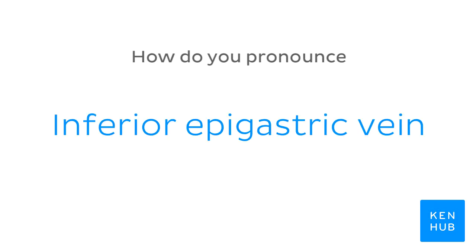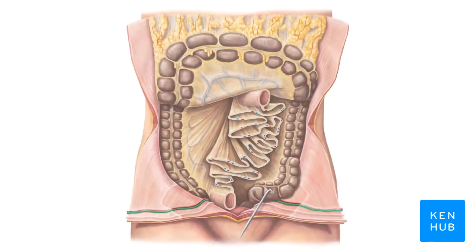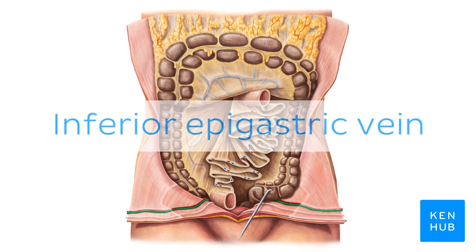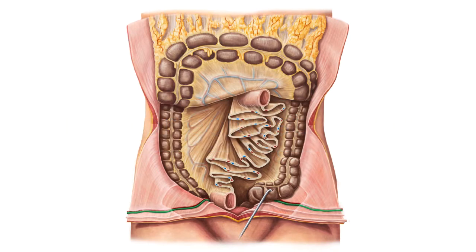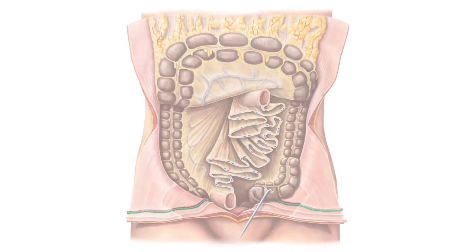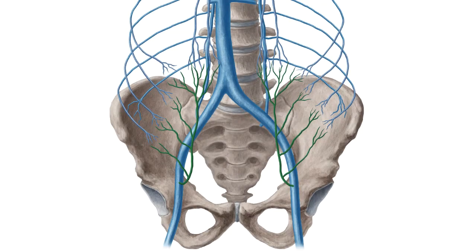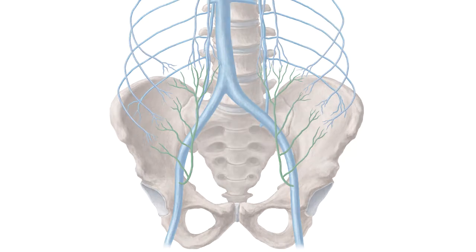How do you pronounce 'Inferior epigastric vein'? Inferior epigastric vein. And to help you memorize this term, here are some additional images. We selected them for you from our Atlas of Human Anatomy, showing the structure highlighted in green.